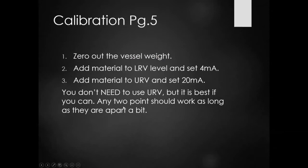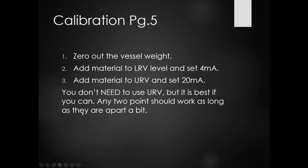Calibrating a load cell is pretty simple — if you've used a scale, that's basically the process. Zero the vessel weight, get a tare measurement, add material to the lower range value and set your 4mA, then add material to the upper range value and set your 20mA. That's ideally the best way to do it. Any two points should work as long as they're spread apart a little — you can go 25% and 50% and get those numbers. Because they're resistive, they should be relatively linear.